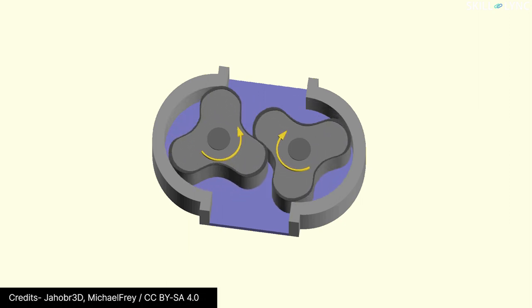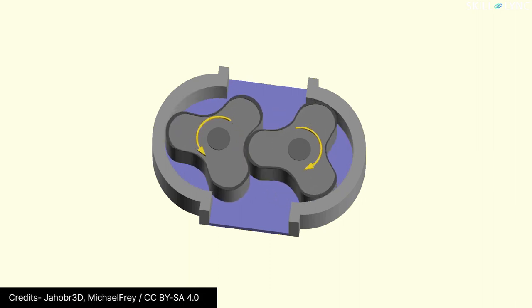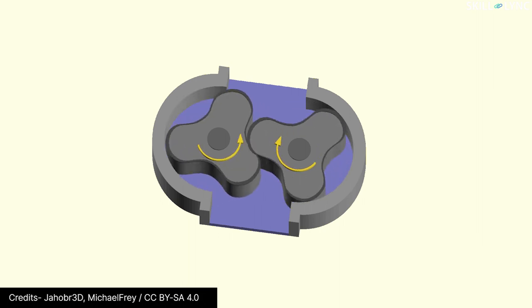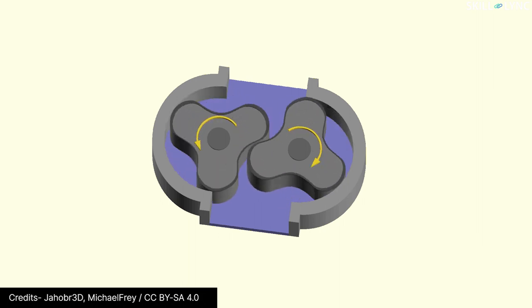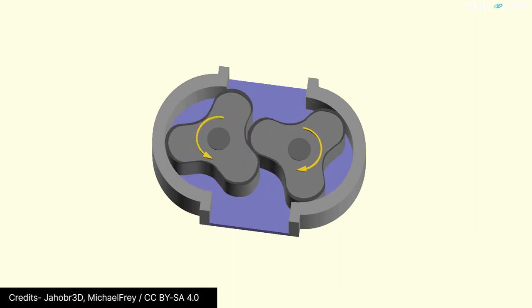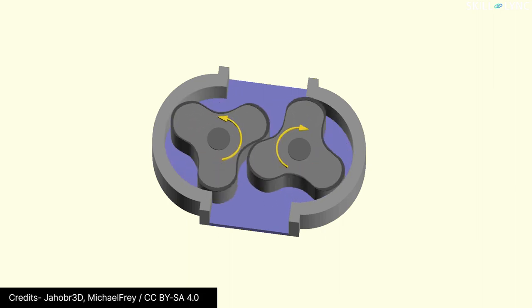When the two lobes of the pumps come out of the mesh, they increase the volume at the inlet side. This forces the fluid into the pump. As the lobes continue rotation, they carry the fuel towards the outlet side. Finally, when the lobes of the pump remesh again, the fluid is pumped into the exit port.